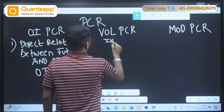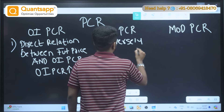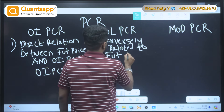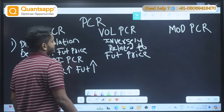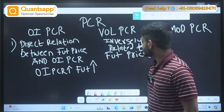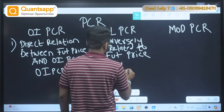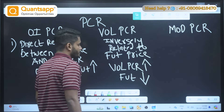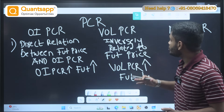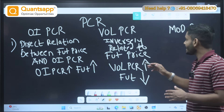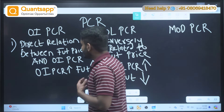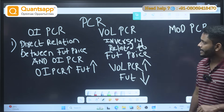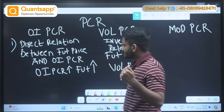Now let's talk about Volume PCR. Volume PCR is inversely proportional to future price — when Volume PCR moves up, the future price will come down. Volume PCR and Modified PCR are more or less the same in terms of characteristics.